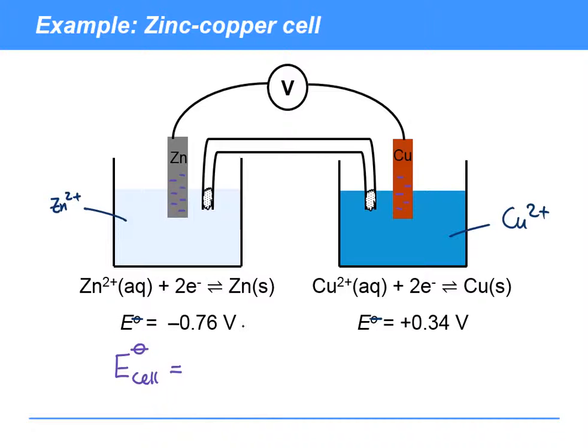We do that just by looking at the standard electrode potentials. So we can see here that the copper is going to be the more positive electrode here, because its standard electrode potential is more positive. And the zinc, therefore, becomes the negative pole.